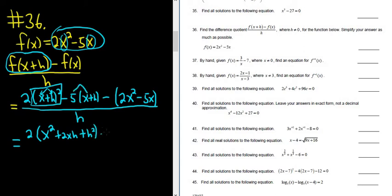And then minus 5x, minus 5h, just distributing that 5. And then negative 2x squared, and then plus 5x. That's all being divided by h. Already you see the 5x is canceled. Let's keep going.